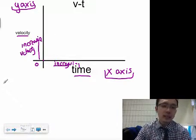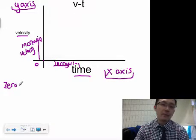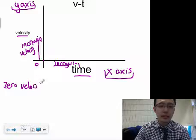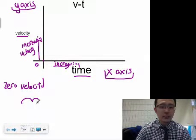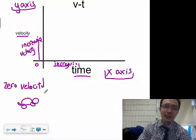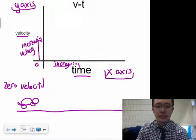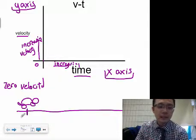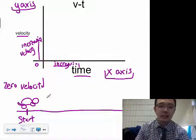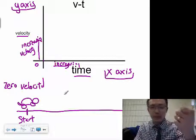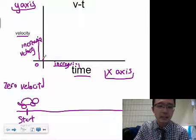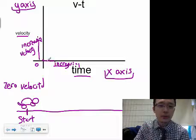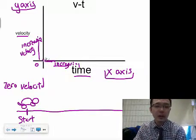For zero velocity, that means you're not moving. If you think about this turtle — a purple turtle — and this is the starting point of a race: if it is at zero velocity, you start the timer and the time keeps ticking, but zero velocity means the velocity on the y-axis stays at zero. That's a flat line right at zero on the y-axis.